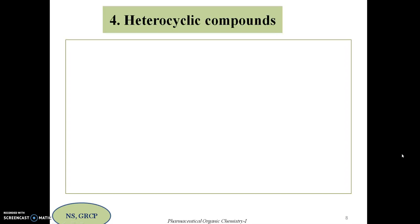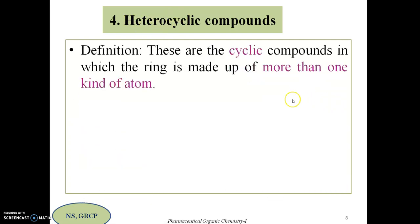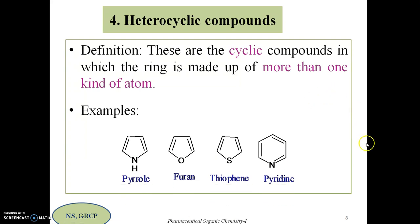The last class is heterocyclic compounds. In alicyclic and aromatic compounds, the ring is made up of carbon atoms only — these are examples of homocyclic systems. But in heterocyclic compounds, the ring is made up of more than one kind of atom. That means, other than carbon, another atom is also present in the cyclic ring — these atoms are known as heteroatoms.